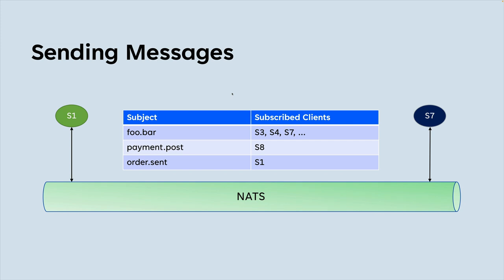NATS allows you to have many subjects, and there's a naming convention we'll cover later. For example, a 'payment.post' subject has client S8 subscribed and interested in any messages sent to it — any number of services can send messages on that subject and S8 will get them. Similarly, client S1 is subscribed to 'order.sent' and doesn't know when or from whom messages will arrive — it could be S8, S4, or any other client.